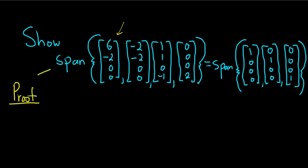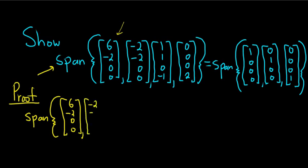So we'll start by writing down the left-hand side. So we have span, and I'll write it down again. So we have bracket [6, -2, 0, 0], [-2, -2, 0, 0], [1, 1, 0, -1], and [0, 0, 0, 2].